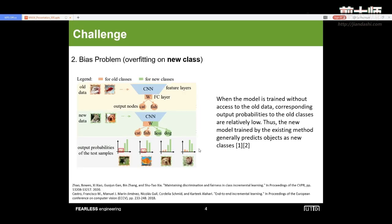Another challenge is the bias problem, also we call it the overfitting on new classes. It means that when the model is trained without access to the old data, the corresponding output probabilities to the old classes are relatively lower. Here we could see that when the new model is trained by existing methods, it will generally predict the incoming objects as the new classes, the lion and the dog.